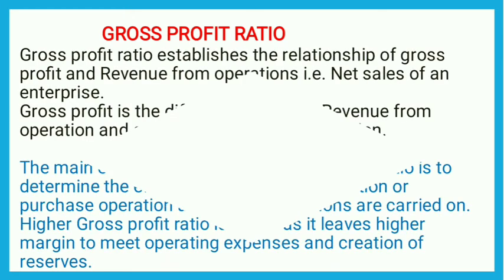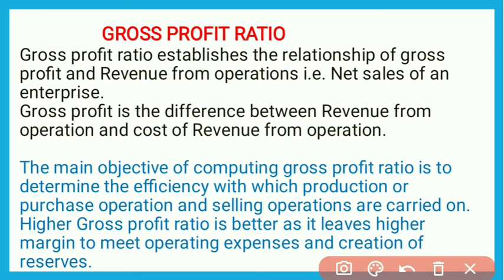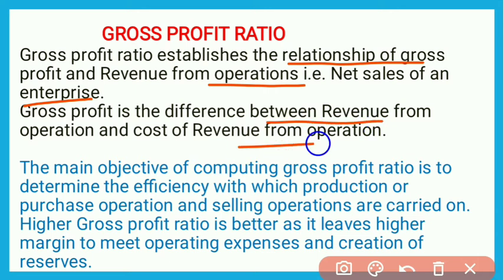Now, gross profit ratio. Gross profit ratio establishes the relationship of gross profit and revenue from operations, i.e., net sales of the enterprise. Gross profit is the difference between revenue from operations and cost of revenue from operations. Revenue from operations means net sales, and net sales means total sales minus sales return.